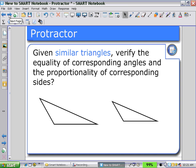Now let's see how some of this functionality can be applied in an example. Given similar triangles, verify the equality of corresponding angles and the proportion of corresponding sides. So we could use our measurement tools, the ruler and the protractor to do this.